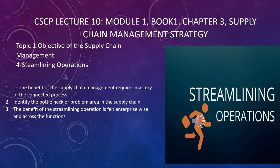The fourth objective is streamlining operations. The benefit of supply chain management requires mastery of connected processes — identify the bottlenecks and problem areas in the supply chain. The benefit of streamlining operations is felt enterprise-wide and across all functions. As a supply chain professional, we need to study the whole process of the system, identify bottleneck areas, and remove any step that is increasing time or creating problems. The process is key to the success of the supply chain, so we need to focus more on process management.